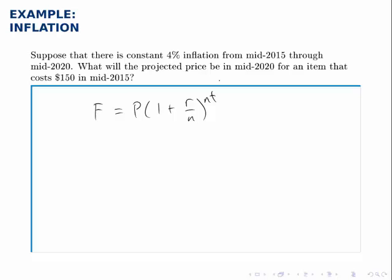So we're told that the inflation rate is 4%. We're projecting forward 5 years, so that'll be T. And we're starting with something that costs $150 in 2015.